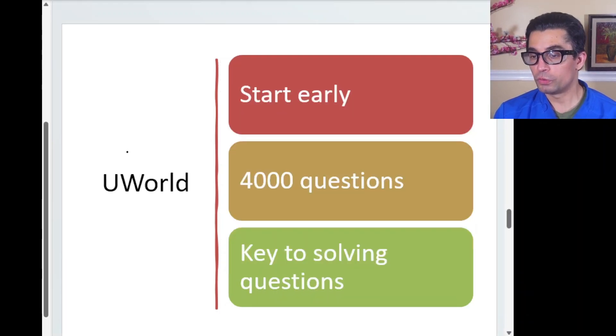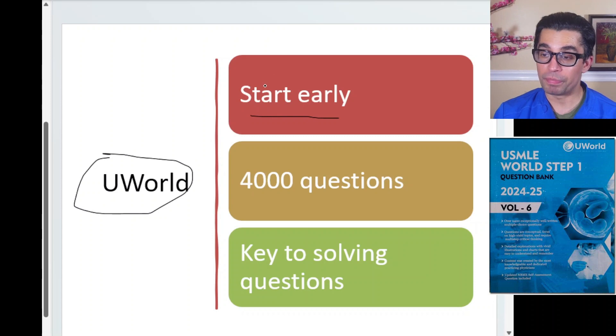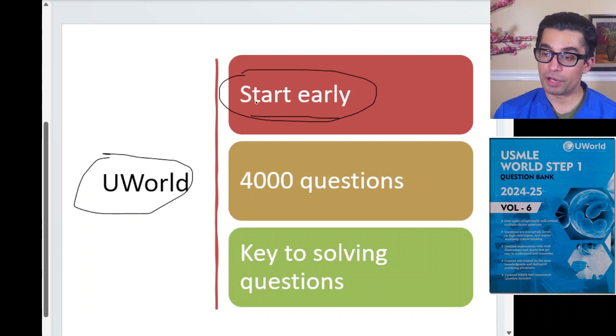For UWorld — about 4,000 questions — start early. If you're preparing after graduation, start UWorld at the same time as First Aid. If preparing during medical school, begin in third year after covering anatomy, physiology, biochemistry, pathology, and pharmacology. UWorld helps you recall knowledge through questions; when you miss something, annotate it in your First Aid or note it somewhere accessible.